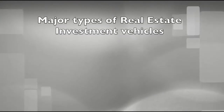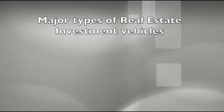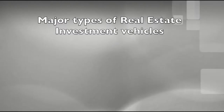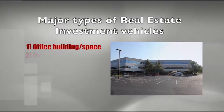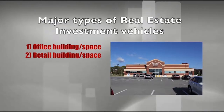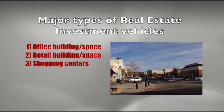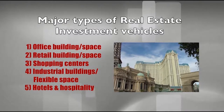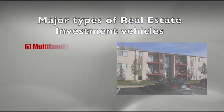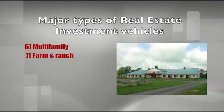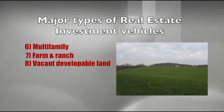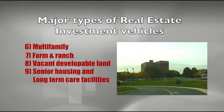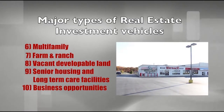Let's start today by outlining the major types of real estate investment vehicles. Although there are dozens of types of commercial properties, we've identified ten major broad categories: number one, office buildings or office space; number two, retail buildings or retail space; number three, shopping centers; number four, industrial buildings or flexible space; number five, hotels and hospitality properties; number six, multi-family property; number seven, farm and ranch property; number eight, vacant developable land; number nine, senior housing and long-term care facilities; and number ten, business opportunities. We'll go through each one in detail.